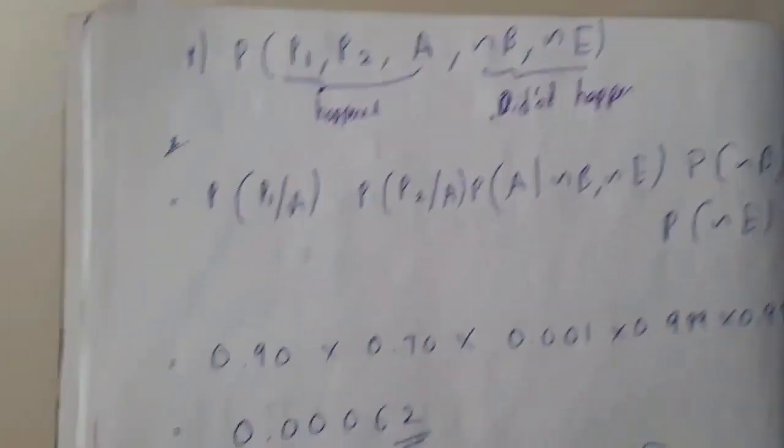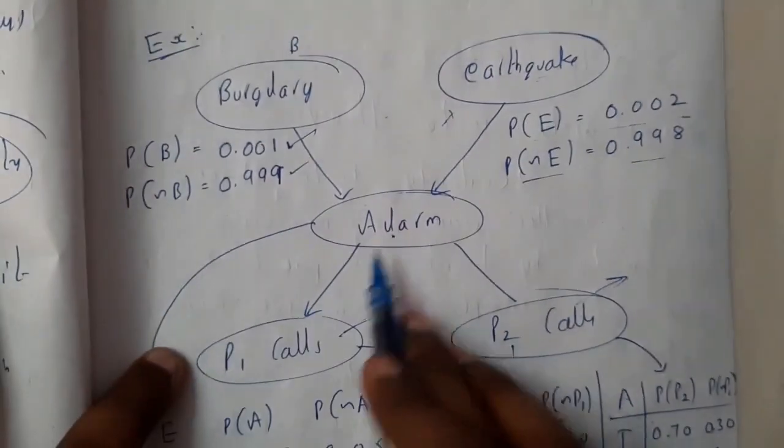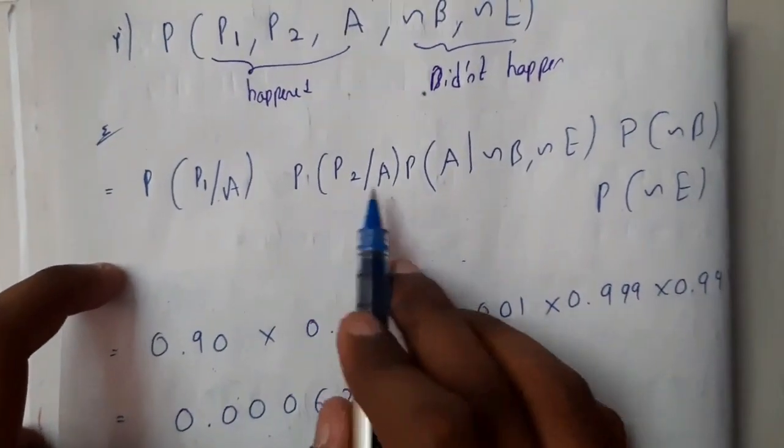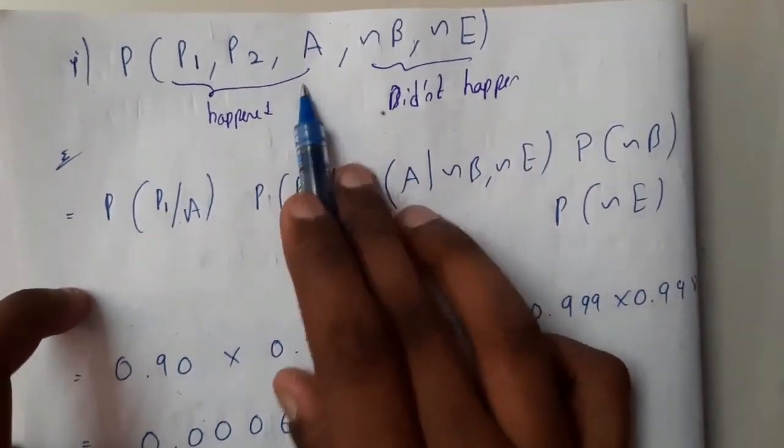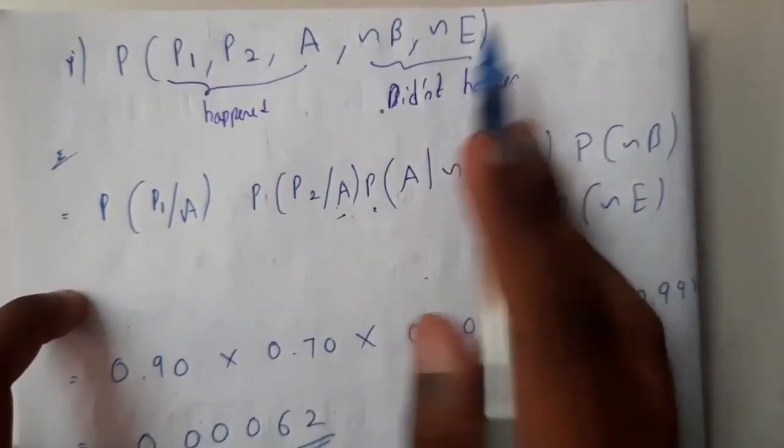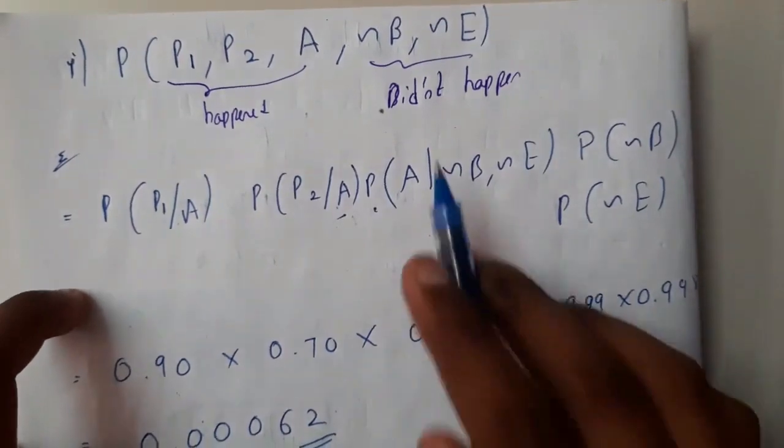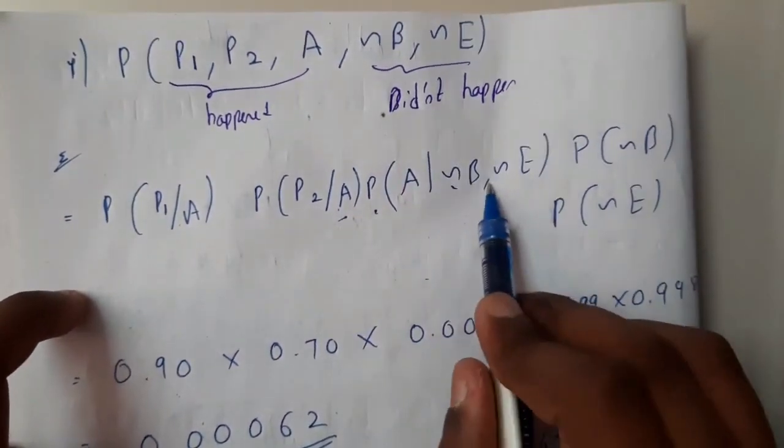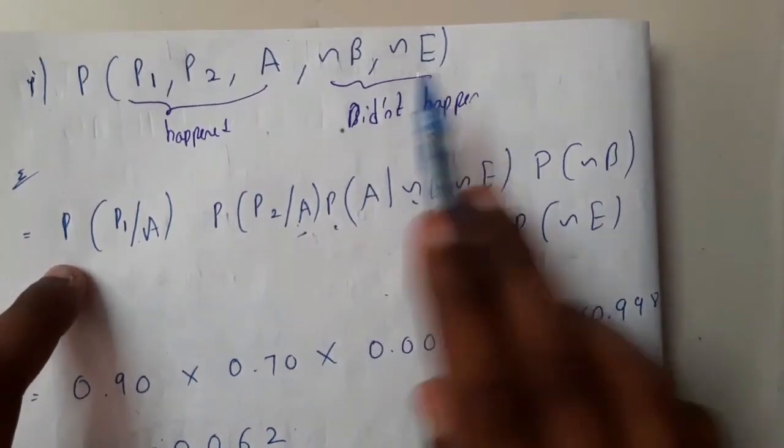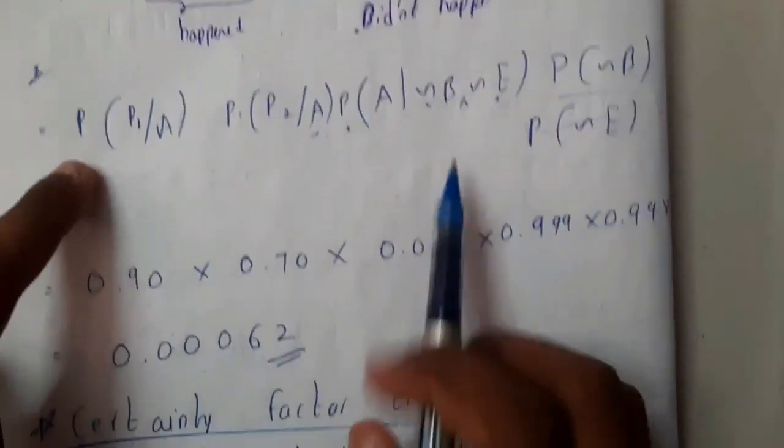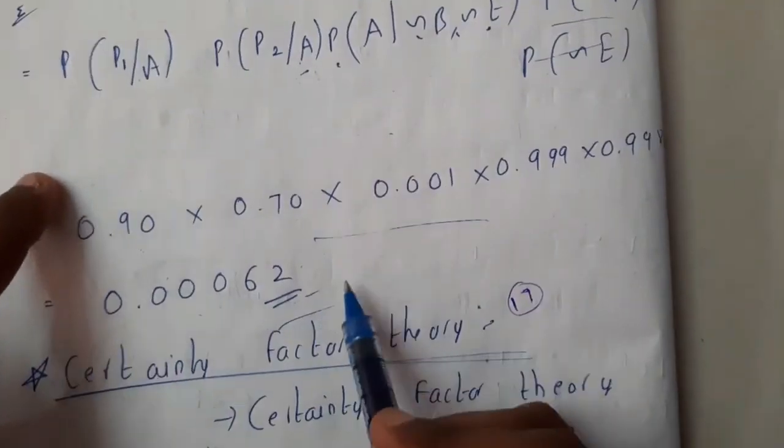Let's solve the problem. First, check the first letter: it is P1. P1 depends on alarm, so write P(P1|A). Similarly P2 depends on alarm: P(P2|A). Next is A, which depends on B and E (burglary and earthquake). Since they're not happening, it's P(A|¬B, ¬E). Burglary and earthquake don't depend on anything, so those are simple: P(¬B) and P(¬E). Just substitute the values and multiply them.